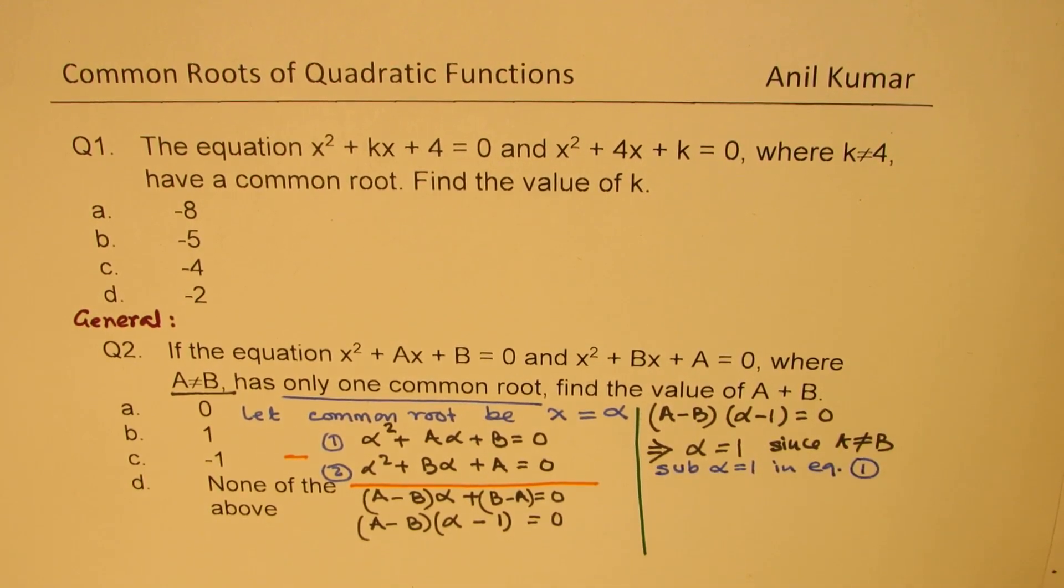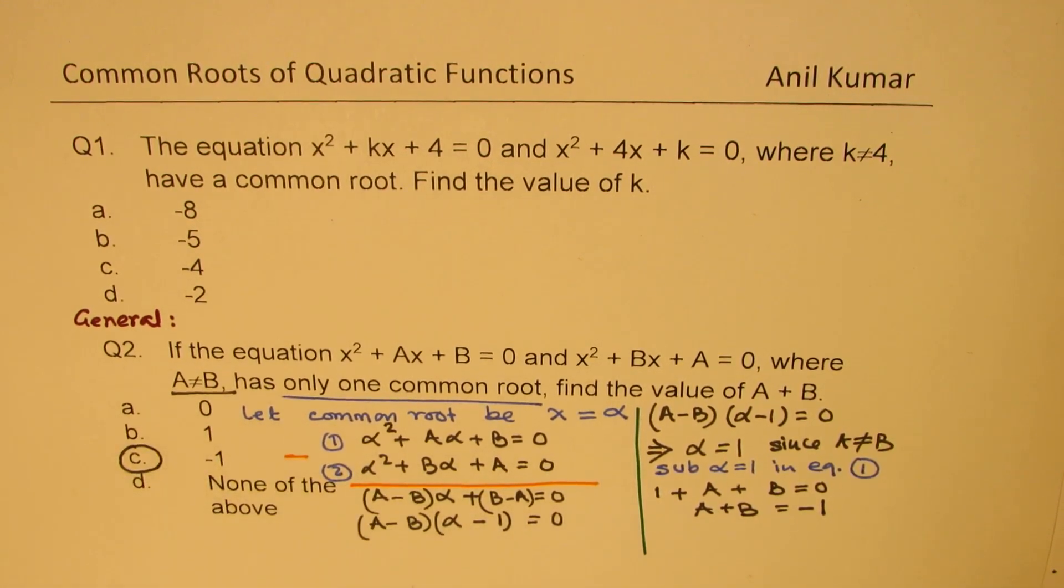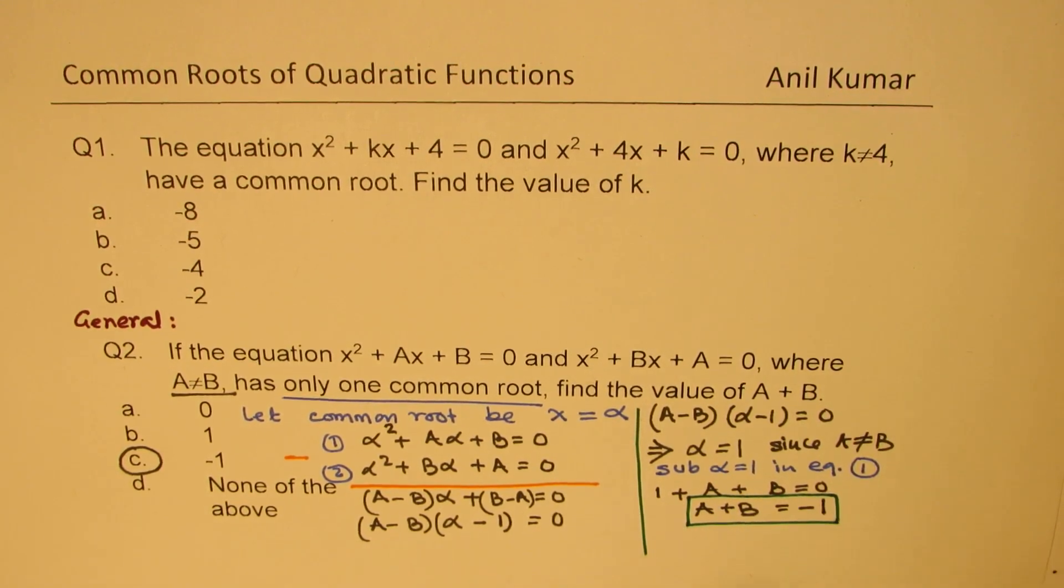So if we do that, we get 1 + a × 1 is a + b = 0. Or the condition is that a + b should be equal to -1. So option c is the right option, clear?